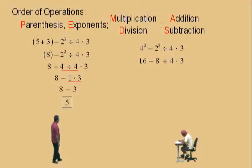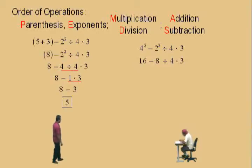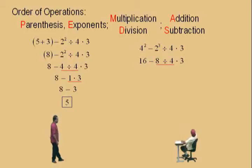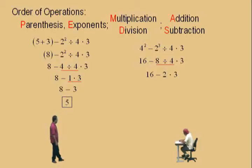Now, here we go, Charlie. Do we have any divisions or multiplications? Yes, we do. Now, which one comes first? Division. The division, so we have to do that first. We have 16 subtract 8 divided by 4 times 3. We've got to do the 8 divided by 4 first. And what's 8 divided by 4, Charlie? 2. Bring down your work: 16 subtract 2 times 3.